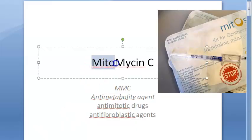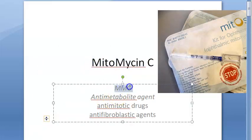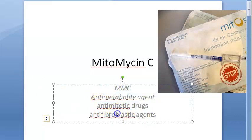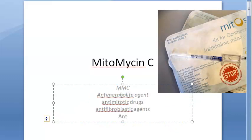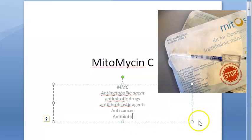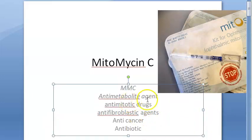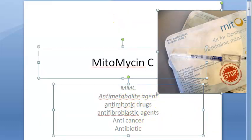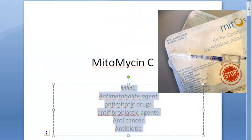In this video, let us look at Mitomycin C, also referred to as MMC. It is an anti-metabolite, anti-mitotic, and anti-fibroblastic agent. Simply put, it has so many 'antis' to describe it: anti-metabolite, anti-mitotic, anti-fibroblastic, anti-cancer, antibiotic — it's a chemotoxic agent.